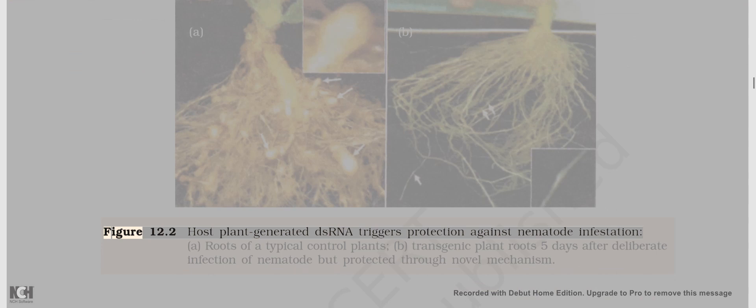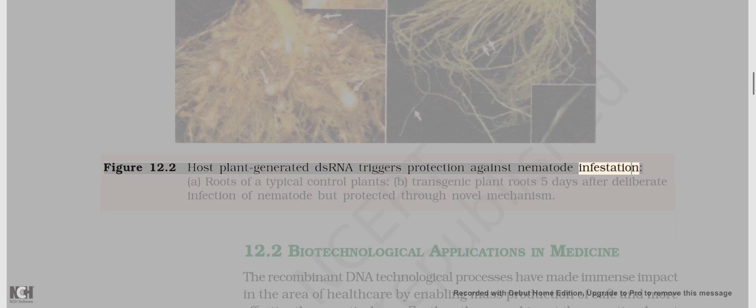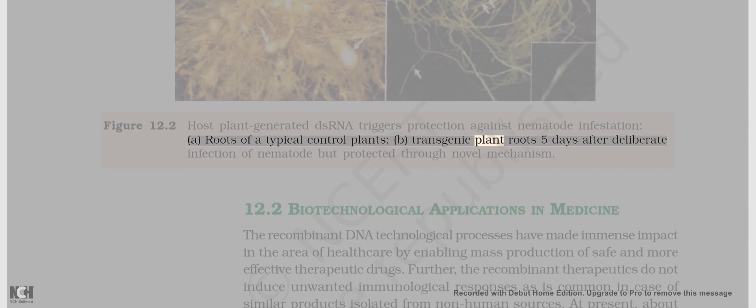The parasite could not survive in a transgenic host expressing specific interfering RNA. The transgenic plant therefore got itself protected from the parasite. Figure 12.2: Host plant-generated dsRNA triggers protection against nematode infestation — (a) roots of a typical control plant, (b) transgenic plant roots five days after deliberate infection of nematode but protected through this novel mechanism.